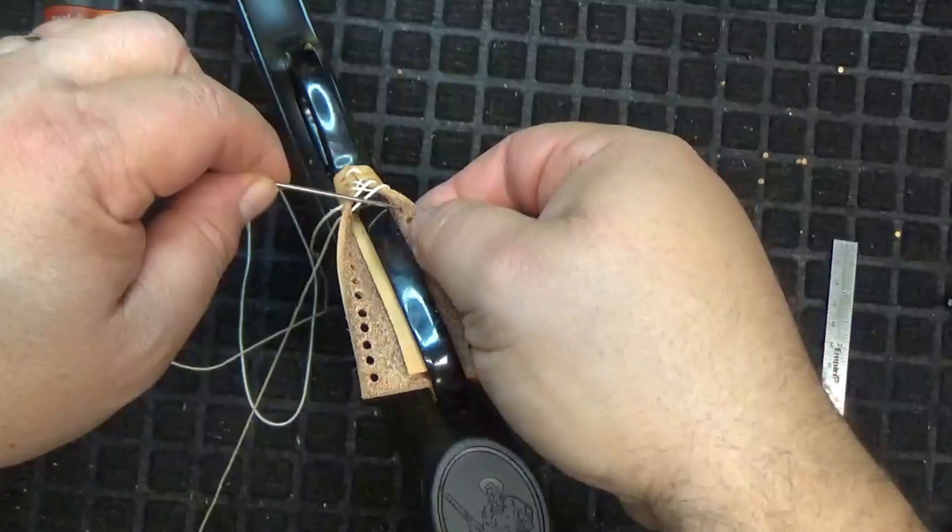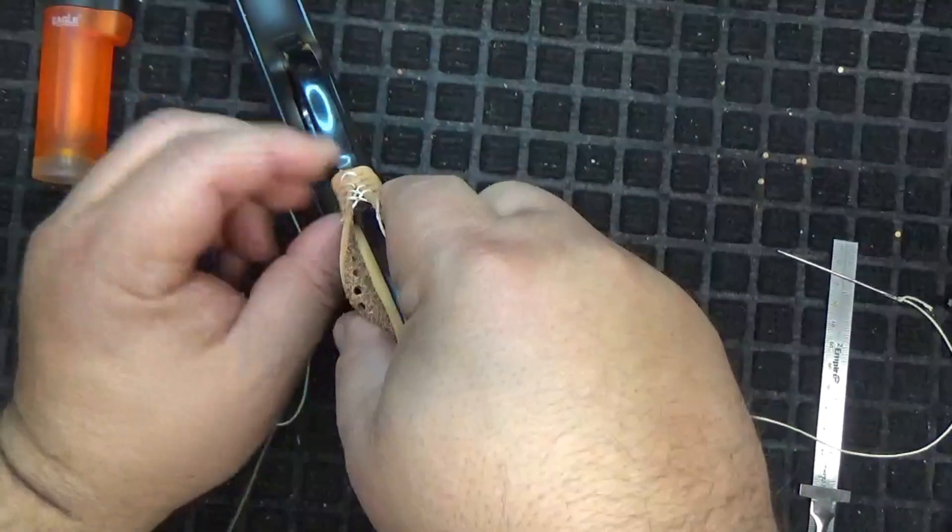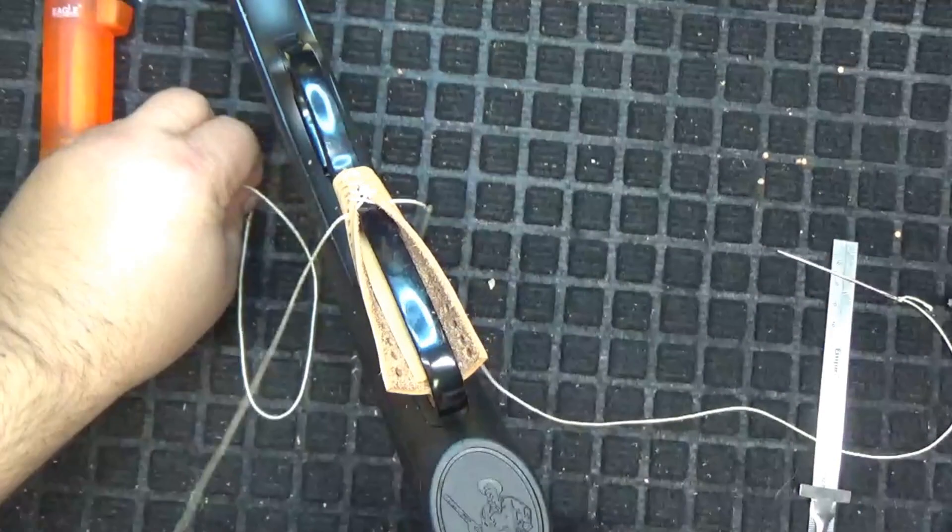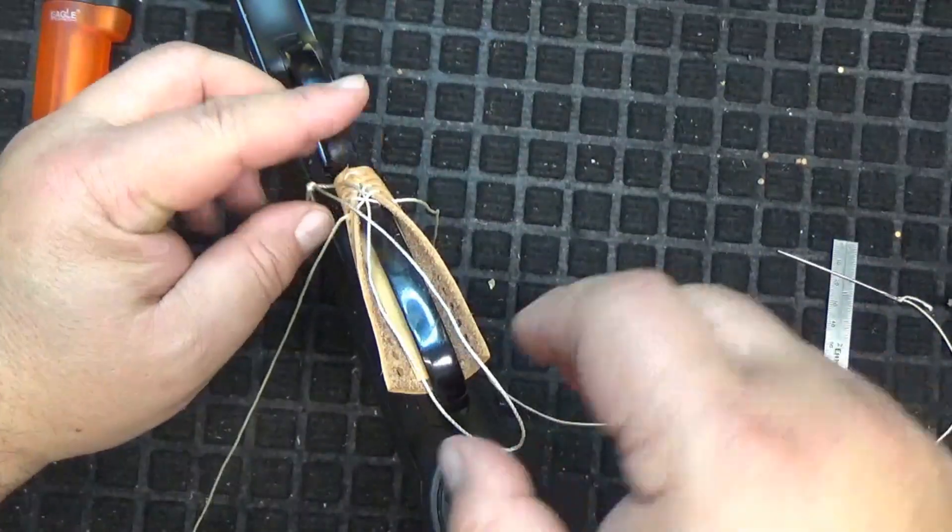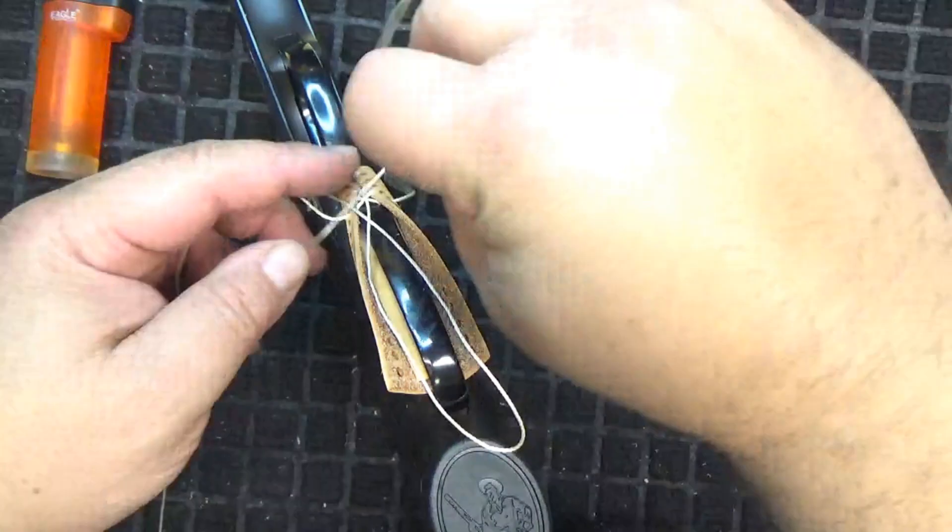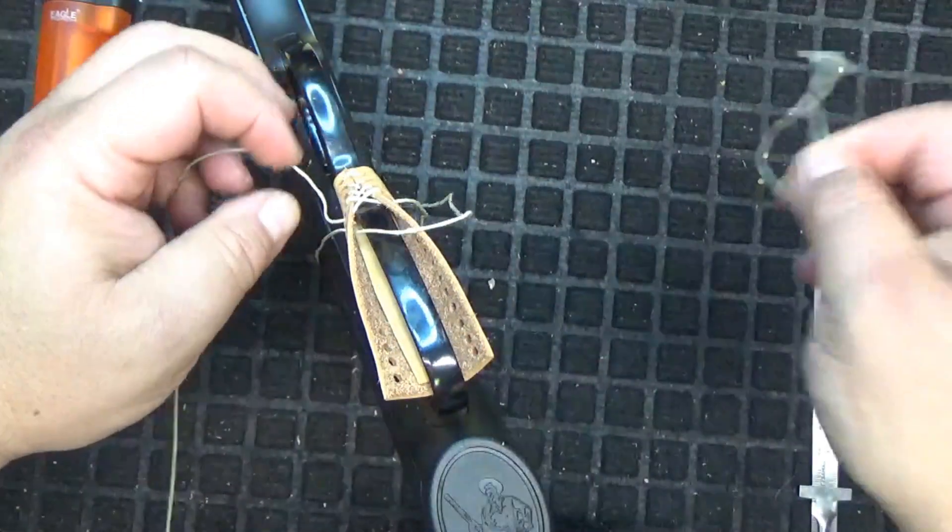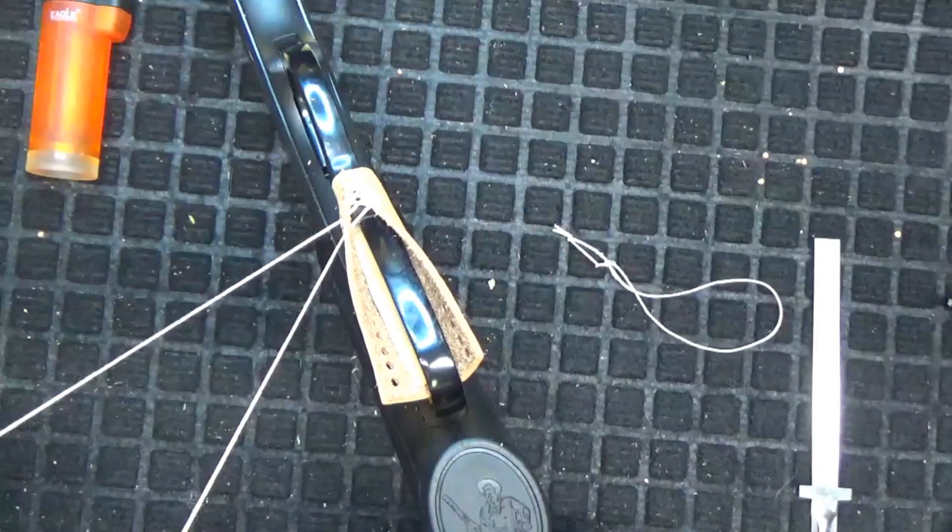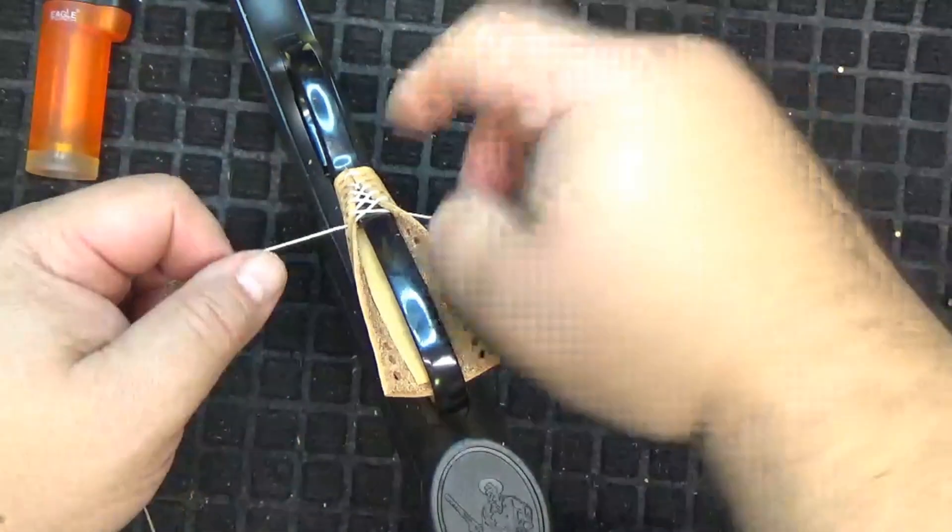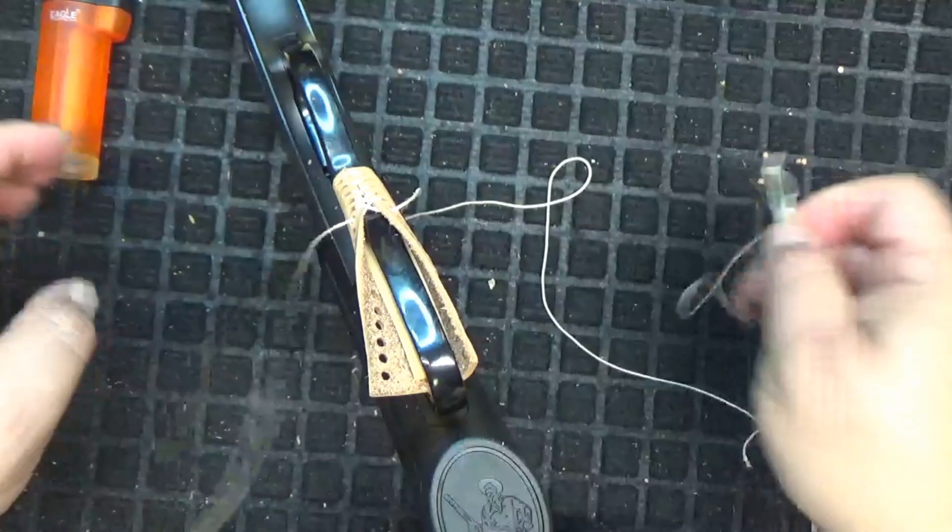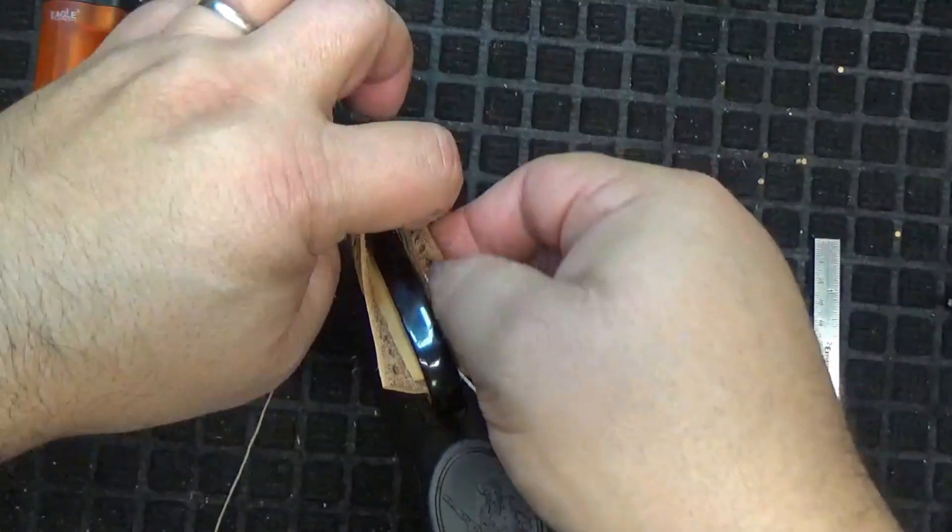Once you get to two or three stitches, the short twelve inch string comes into play. You just go ahead and lay it in there and forget about it. Make sure it doesn't get stitched in. We'll just hide it, tuck it underneath here so it's out of the way.